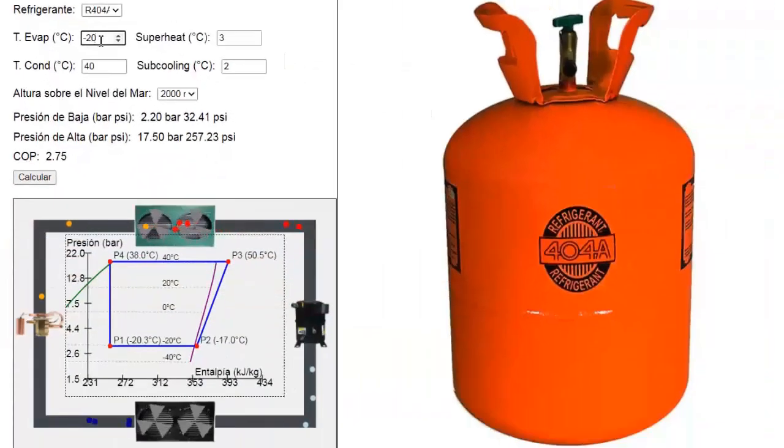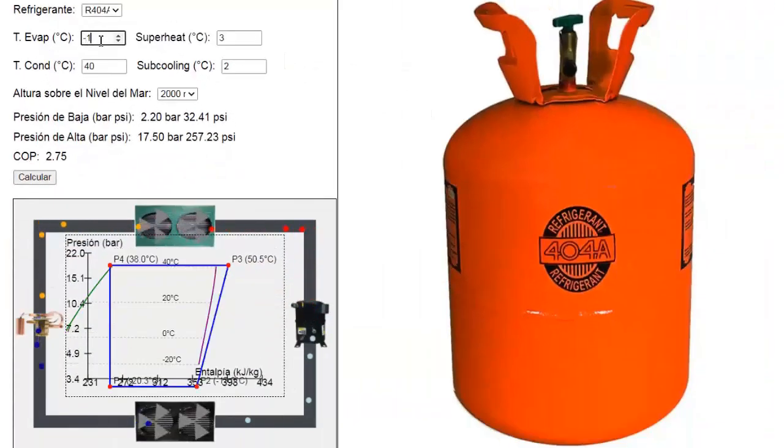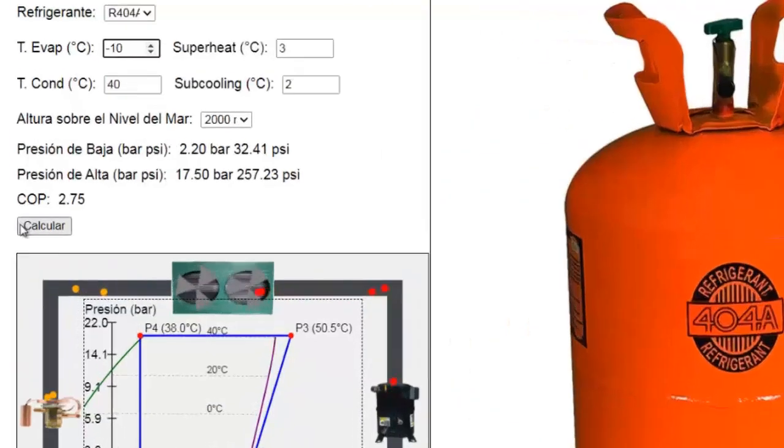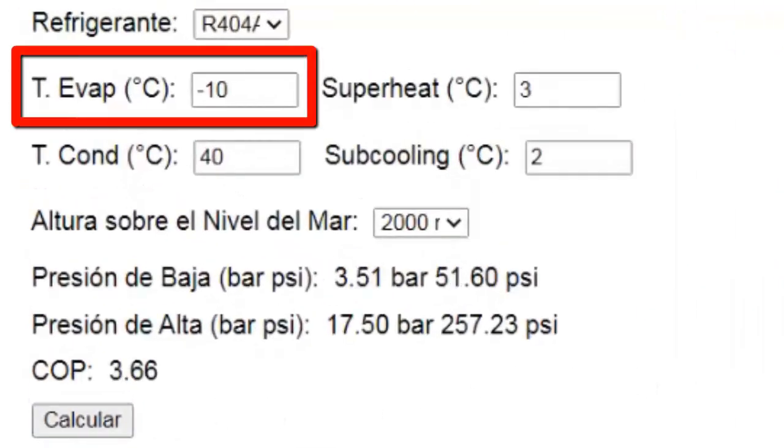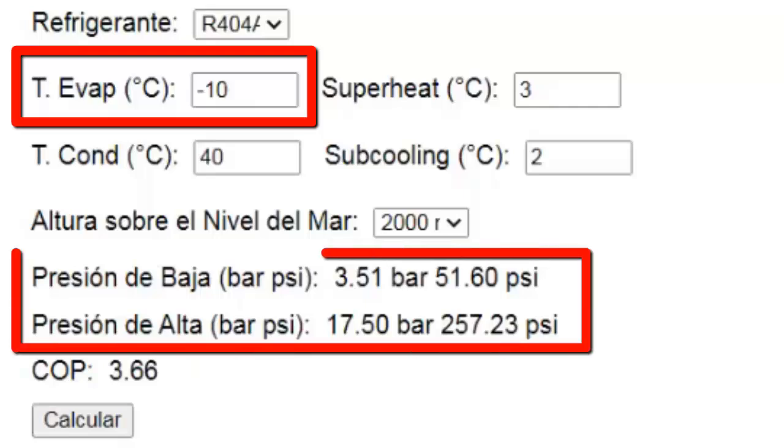Let's check the pressure value when an evaporator temperature of minus 10 degrees Celsius is needed, which is typical for refrigeration equipment. The low and high pressure values are displayed in the diagram.